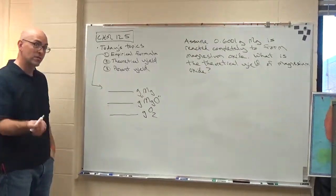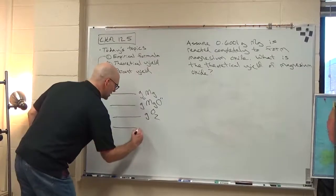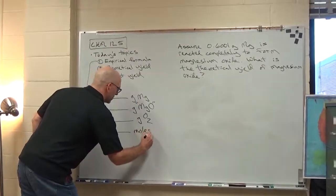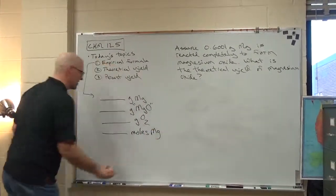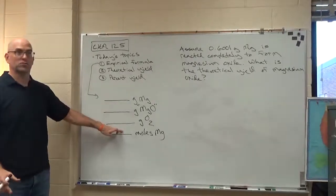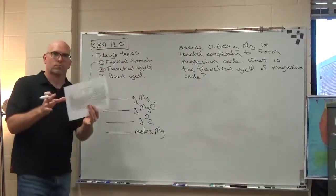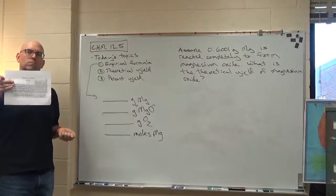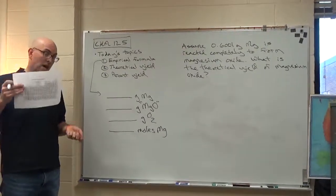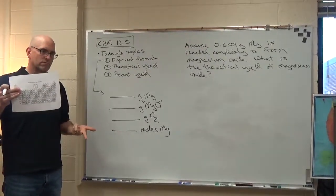Now you're kind of home free because the whole point is to figure out what is the empirical formula of magnesium oxide. And to do that, you'll need to calculate the moles of magnesium. To go from grams to moles should be pretty straightforward by now. Use your conversion factor, your atomic mass, molar mass of an atom.